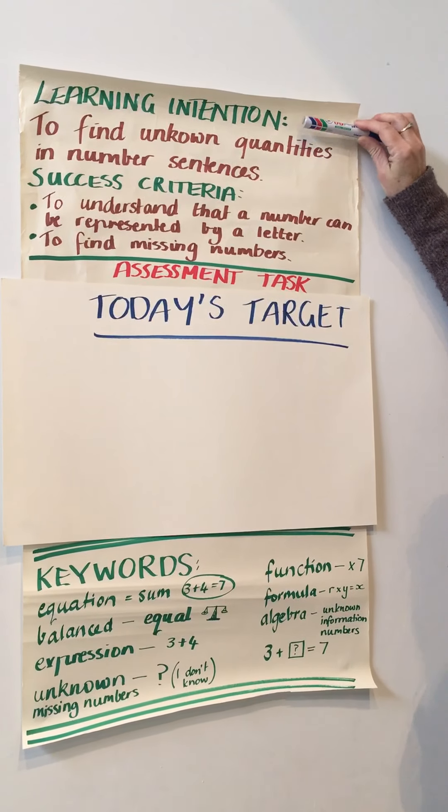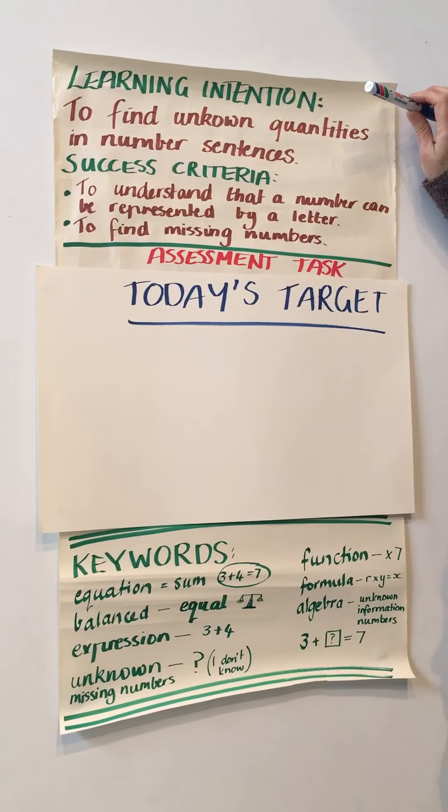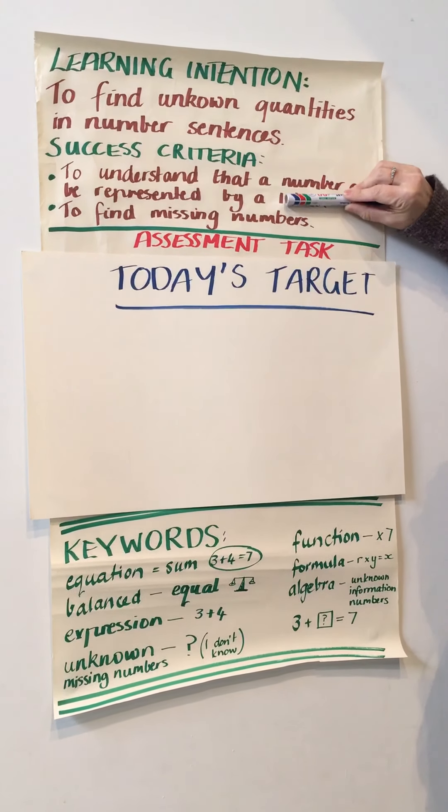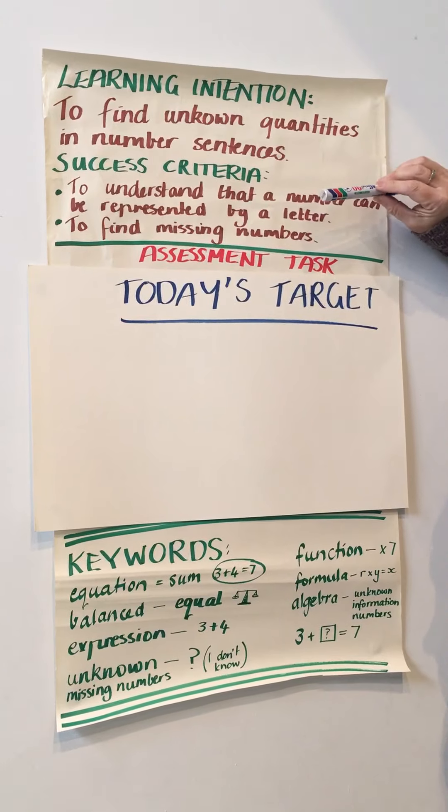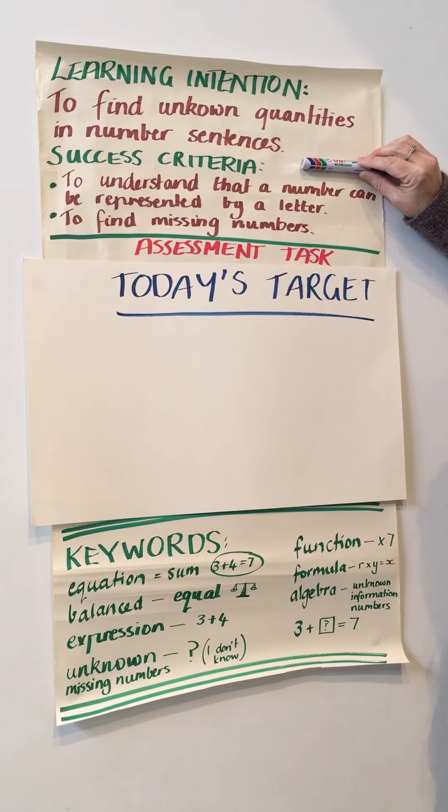It is to find unknown quantities in number sentences. How do we know we've achieved it? Well, we look at the success criteria. You've got a more extensive list on your slides. I've pulled these two out because they really fit in well with what we're doing today.